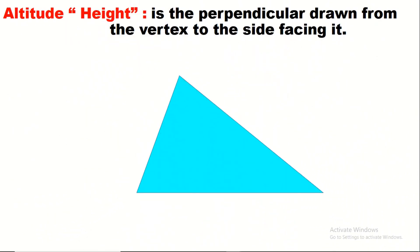Welcome to our channel Learning Man. In this video we're going to learn about all the special lines that can be drawn in a triangle: median, height, bisector, and perpendicular bisector. Let's start together. The altitude or height is the perpendicular drawn from the vertex to the line facing it.